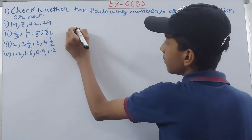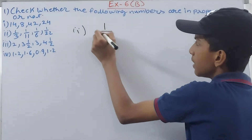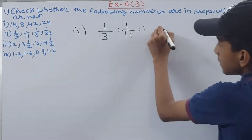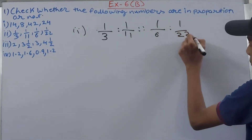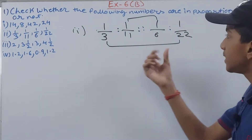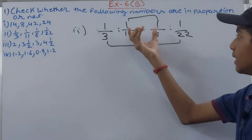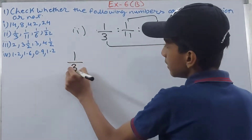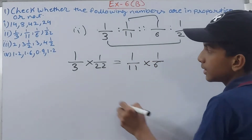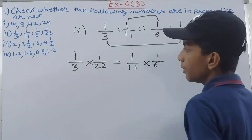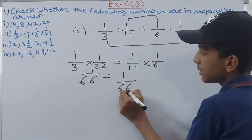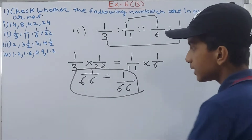The next part has fractions: 1/3 is to 1/11, proportion sign, then 1/6 is to 1/22. The extremes are 1/3 and 1/22; the means are 1/11 and 1/6. Multiplying: (1/3) × (1/22) = 1/66, and (1/11) × (1/6) = 1/66. Both products are equal, so the answer is yes — the numbers are in proportion.